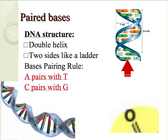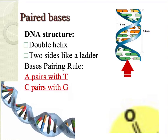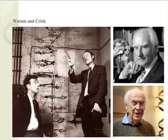In order to create a complementary strand, DNA follows a specific base pairing rule, where adenine is paired with thymine and cytosine is paired with guanine. Watson and Crick are the scientists credited for finding out the base pairing rule and also the structure of DNA.